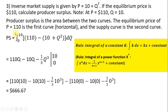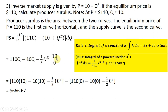Producer surplus is the area between the two curves: the equilibrium price ($110) can be thought of as one curve, and the supply curve as the second. Producer surplus is the difference between the market price and the supply curve. Setting up the definite integral from 0 to 10 between the market price and the inverse market supply curve, using the rules for a constant and the power function, evaluating at 10 and then at 0, producer surplus is approximately $667.